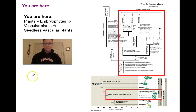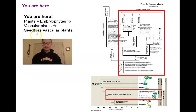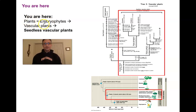Hello fellow botanists. Welcome to our next lecture in our trip through the plants. In this particular lecture we're going to look at the seedless vascular plants in particular. So where are we in our phylogenetic tree? We're still talking about plants, and remember that plants are referred to as embryophytes. The sporophyte is nurtured by the gametophyte in all of our plant groups, and that's what distinguishes our plants from our green algae.